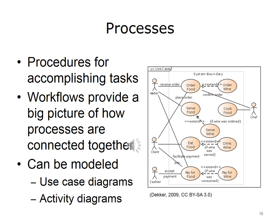The actors are the restaurant patron, identified as the client, the waiter, the cashier, and the chef. Each actor interacts with the system in its own way. A waiter receives the food order and serves the food. The chef cooks the food. A client orders food, consumes it, and pays for it. A cashier accepts payment. The use case diagram shows how the process can be extended to include wine along with the food.